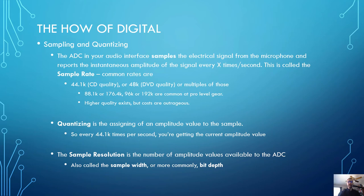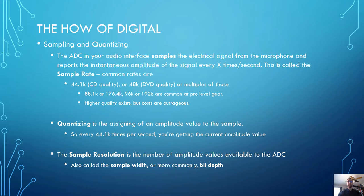So how does this work? It comes down to the ADC and sampling and quantization. The ADC in your audio interface is sampling the electrical signal from the microphone and reporting the instantaneous amplitude, or volume, or changes in air pressure of the signal that the mic is receiving from the air around it every x number of times per second. This number of x times per second is called the sample rate, and is how many samples make up one second of audio.